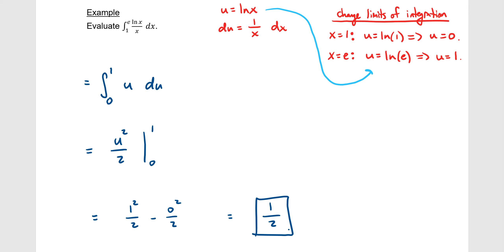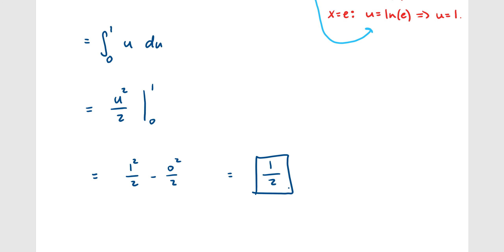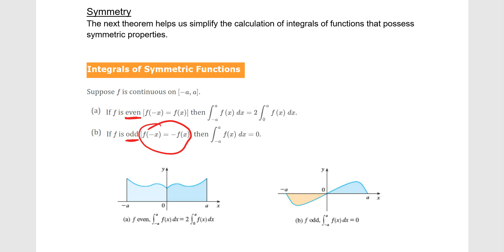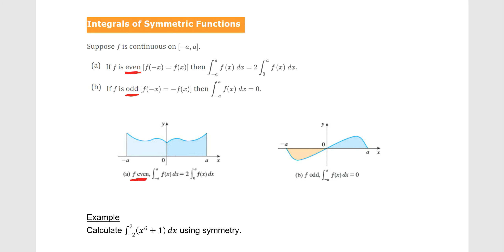If you recognize what to let u equal, these integrals go smoothly. The last topic is symmetry. Sometimes the symmetry of a function simplifies an integral. An even function is a mirror image over the y-axis: f(negative x) equals f(x). An odd function is a 180-degree rotation of itself: f(negative x) equals negative f(x).